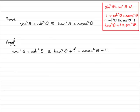And if I simplify this, I can see that 1 take away 1 is 0. So, I'm just left with tan squared theta plus cosec squared theta.